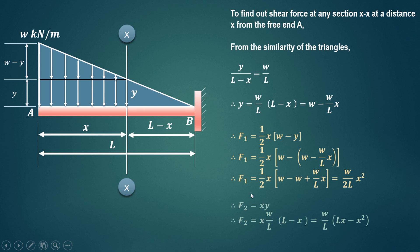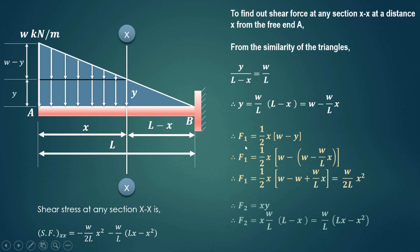The shear force at any section XX is the sum of the two loads F1 and F2. As they act in the downward direction, we attach a negative sign. So shear force equals minus W upon 2L times X squared, minus W upon L times (LX minus X squared). This is the general shear force equation for any distance X from the free end.